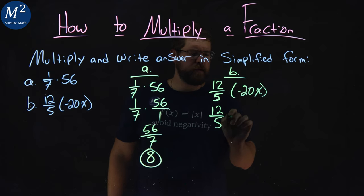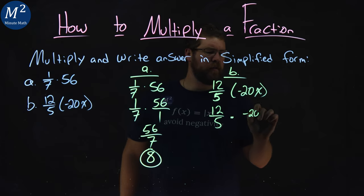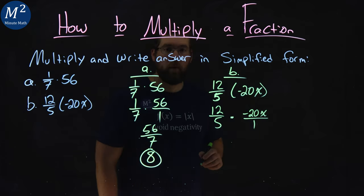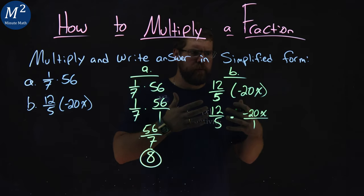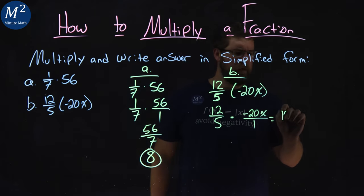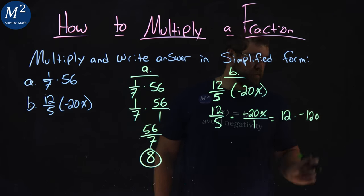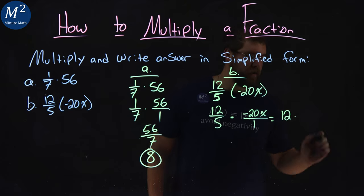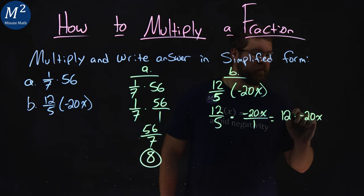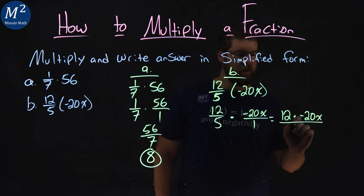We have 12/5 times negative 20x over 1. Now let's rewrite this all to be one fraction. We can do it here: 12 times negative 20x over 5 times 1.